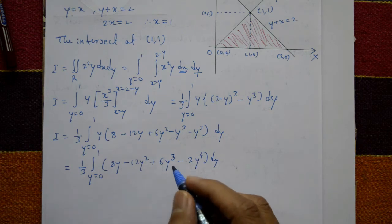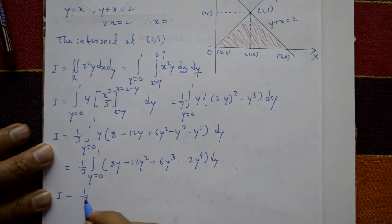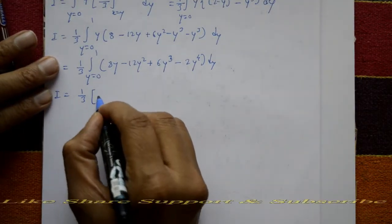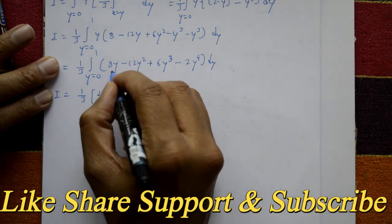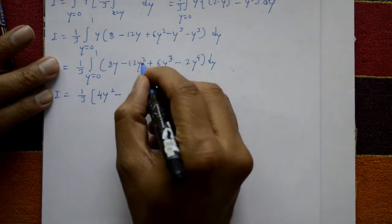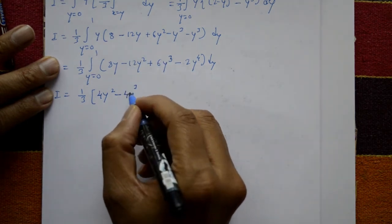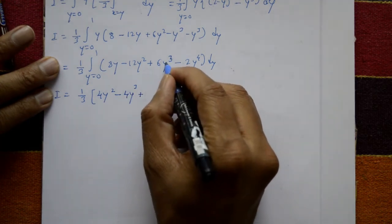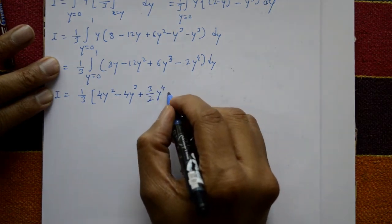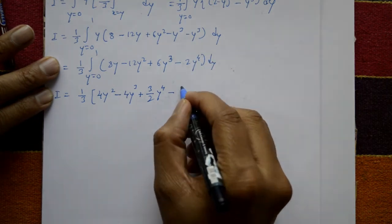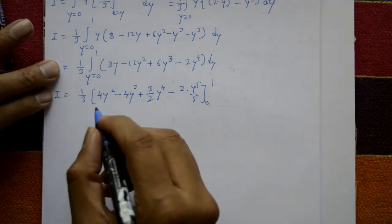Now integrate with respect to y: I equals 1/3 times [4y squared minus 4y cubed plus (3/2)y to the 4th minus (2/5)y to the 5th], evaluated with limits 0 to 1.